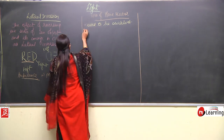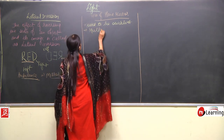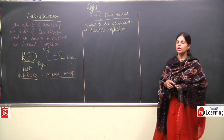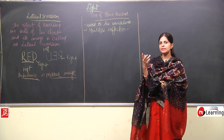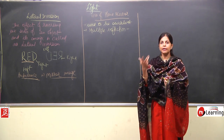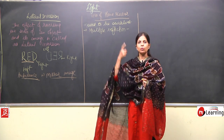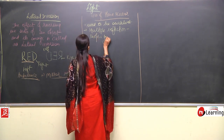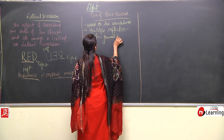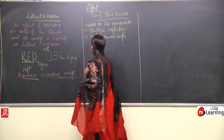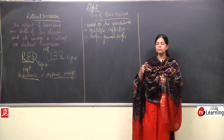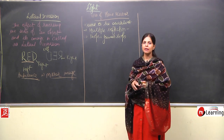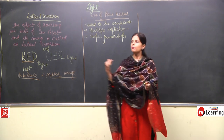Plane mirrors are also used for multiple reflection in parlors. In parlors, mirrors are placed all around so that you can see your hairstyle from the back side as well — however you want to see. This multiple reflection is also utilized in many shops like jewelry shops.